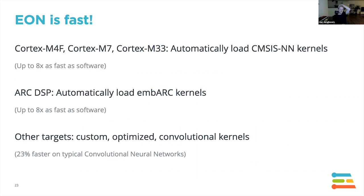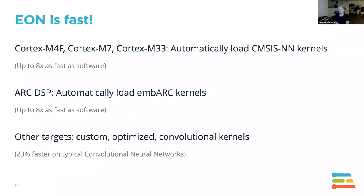EON also uses unified kernels. When we create our release, we load optimizations for ARM or ARC DSP cores automatically and make them available. Then dynamically at compile time, we recognize what MCU is being targeted and automatically load those kernels — something you'd normally do by hand. We also ship custom kernels: for Cortex-M0+, an optimized convolutional kernel that's 23% faster on typical convolutional neural networks, which you get out of the box.